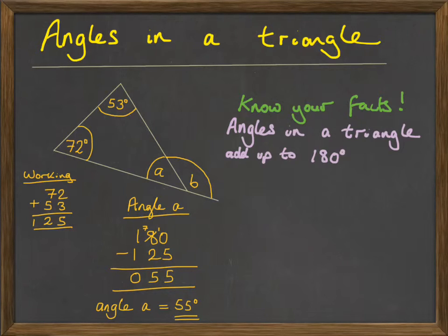We can now use the fact that angles A and B lie in a straight line, and the angles on a straight line add up to 180 degrees. So again, we could do a quick subtraction, and we can find that angle B will be 180 take away 55, which will be 125 degrees.